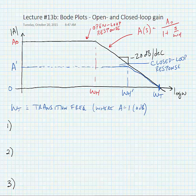From this plot we can find a couple of things. One, we know that the closed-loop gain is approximately equal to one over beta. So this is approximately one divided by beta.